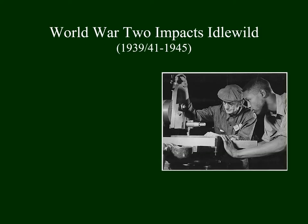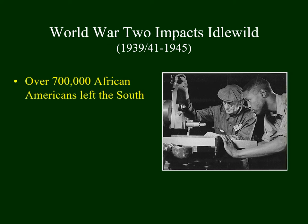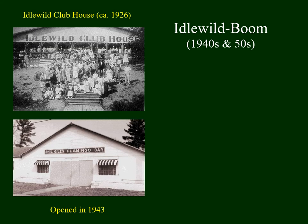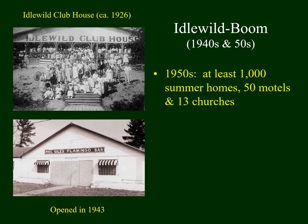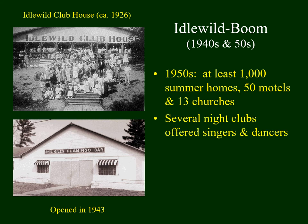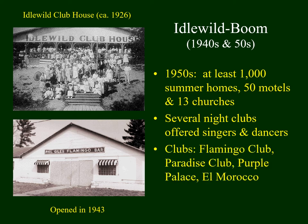American involvement in World War II began in 1941. As a result, over 700,000 African Americans left the South and moved to communities in the North and West, which shaped the history of Idlewild. The 1940s and 1950s were a boom time for Idlewild. The Idlewild Clubhouse was a favorite spot for young people during the day, and the Flamingo Bar was one of many popular nightclubs. By the 1950s, there were over a thousand summer homes, 13 churches, and numerous nightclubs. Anyone was welcome — the Purple Palace and El Morocco were two additional nightclubs.